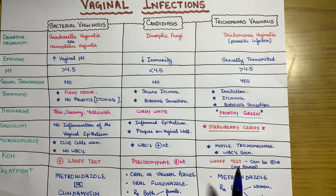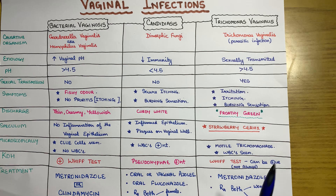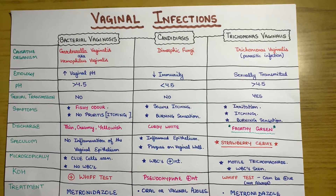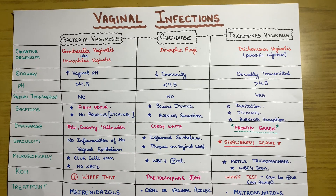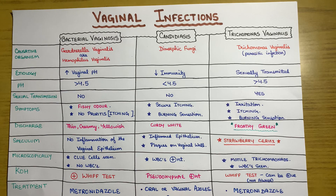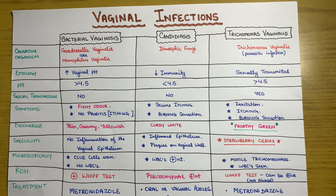Treatment for trichomonas vaginalis is metronidazole. Since it is sexually transmitted, both the woman and her partner must be treated. That covers all three vaginal infections — I hope you learned from this video. Thank you very much.